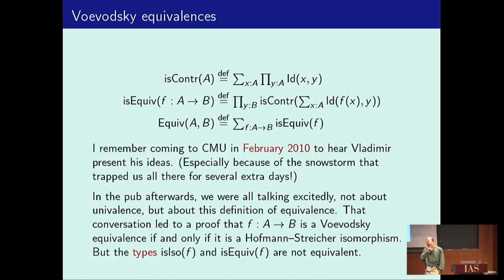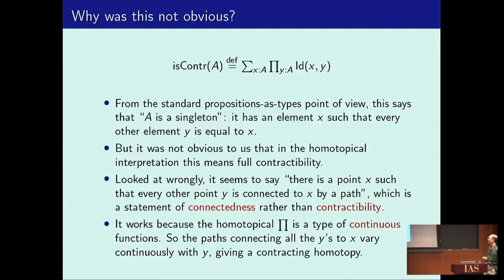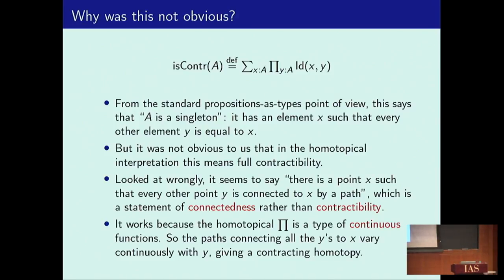The reason we were excited about this definition — at first it seems unintuitive if you look at it the wrong way. I remember Vladimir saying that it took him a long time to come up with a definition like this that would work. Nowadays it seems obvious, but at the time to some of us it was not obvious at all. From the standard propositions-as-types point of view, this says that A is a singleton type: there's a point of A such that for every other element Y of A, X equals Y.